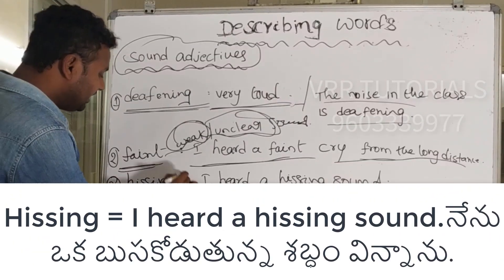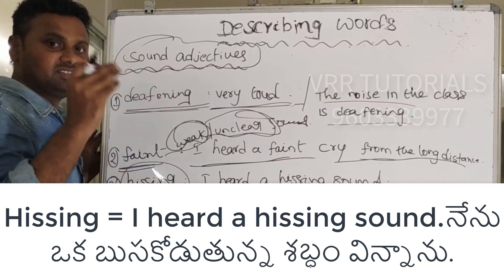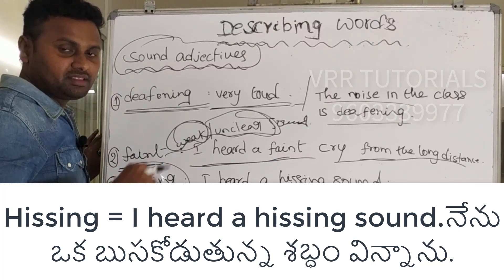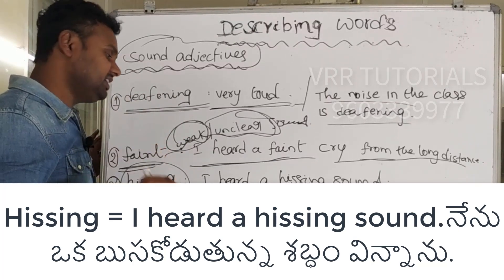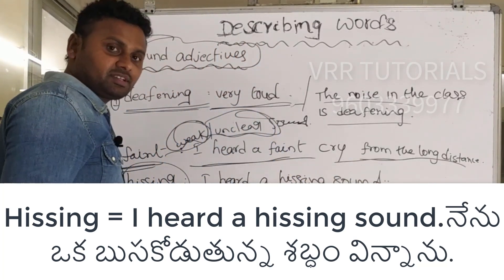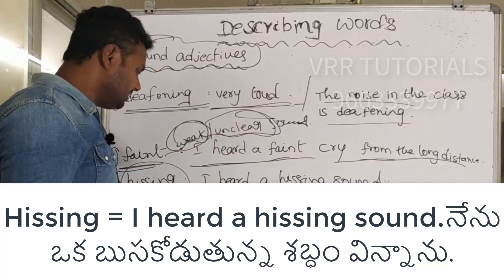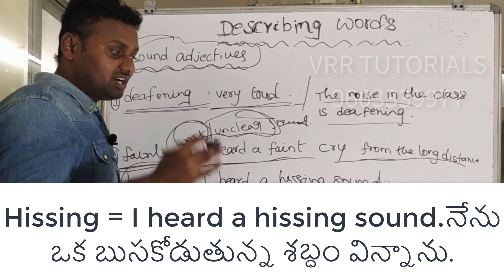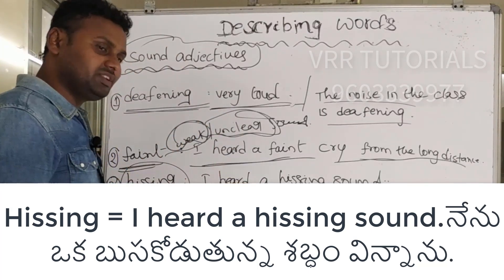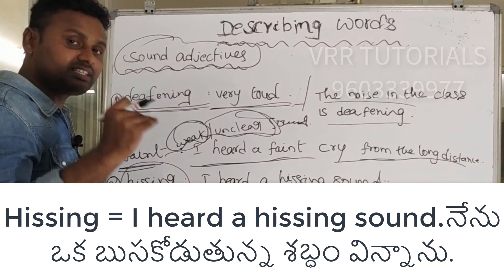The third one is 'hissing.' Hissing sound is generally used for snakes — the snake hissed. For example: I heard a hissing sound; there may be a snake in the bushes. Hissing is especially used for snakes and similar hissing sounds.